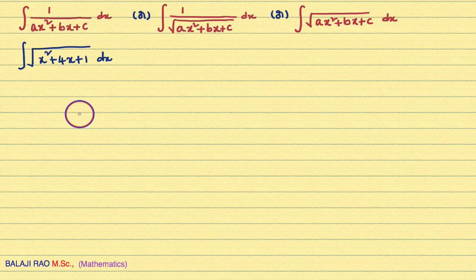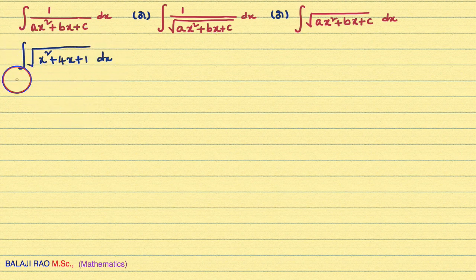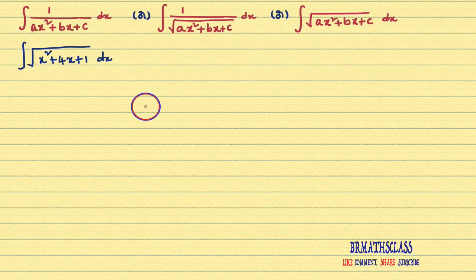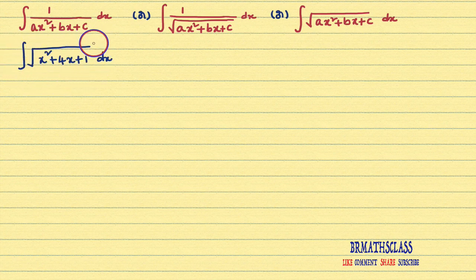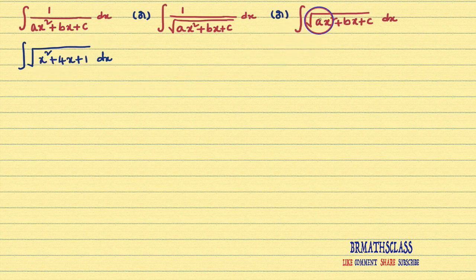Hi friends, I am Balaji Rao. Welcome to BRMAX class. In this class, we will learn how to calculate this integral. If the given integral is any one of these three forms, the procedure is same. First, we will identify which form this integral is. You can observe here 1 divided by is not there, so this problem comes under the integral of square root of ax² + bx + c dx.